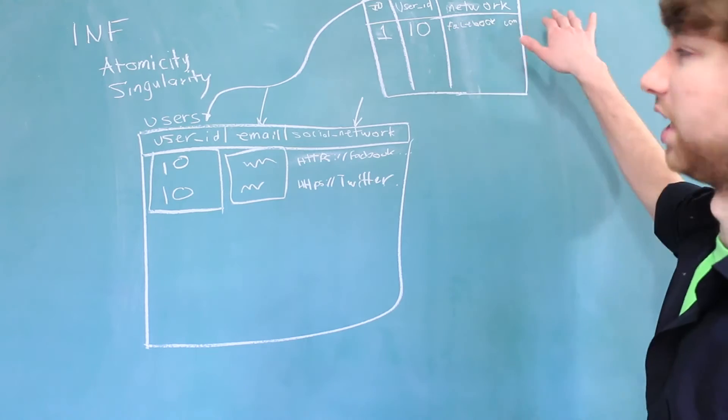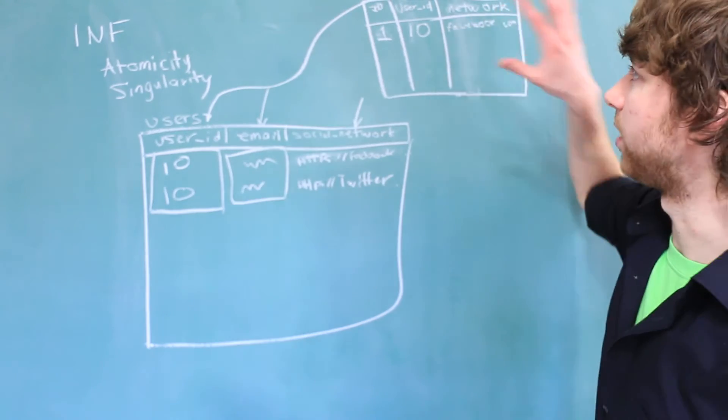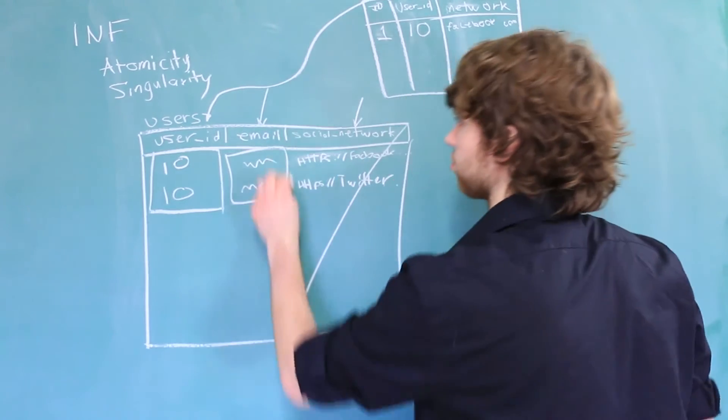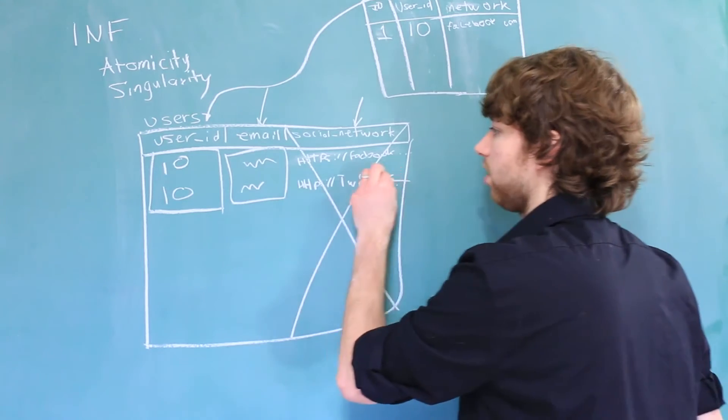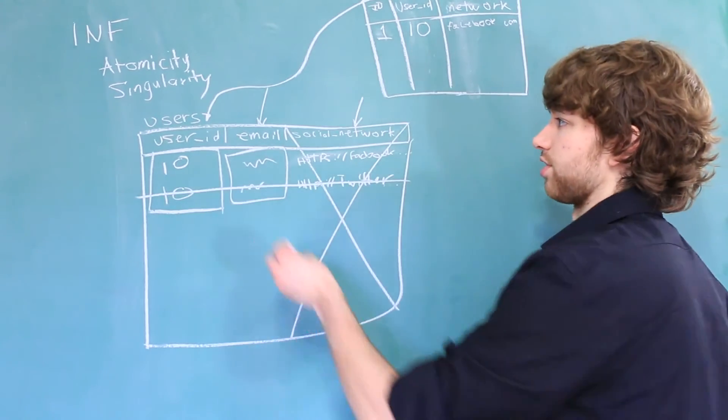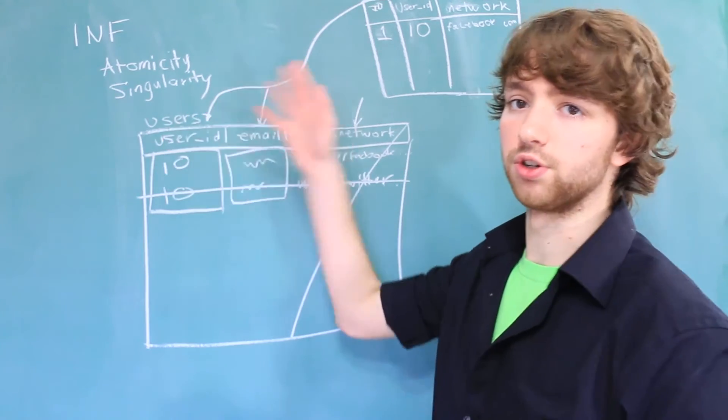Obviously, we would put the whole link to their Facebook, but that's fine for right now. Now that we have this, we can alter the original table. We actually don't even need the social networks column anymore. And we don't need this row because that's redundant information, and it's not allowed. So the final result is just going to be a user ID and email, and then any other data that's related to the user goes in here.